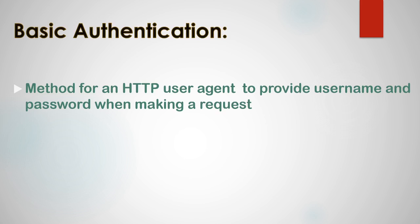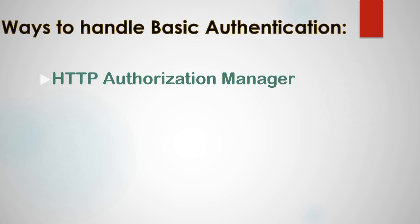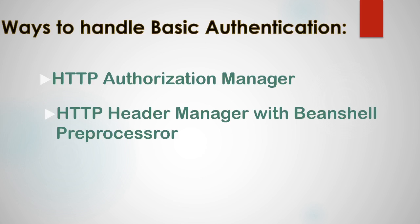Now let's look into the ways to handle basic authentication in JMeter. We have two ways: first, using HTTP Authorization Manager, and second, using HTTP Header Manager with BeanShell preprocessor. We will look into each of them one by one.